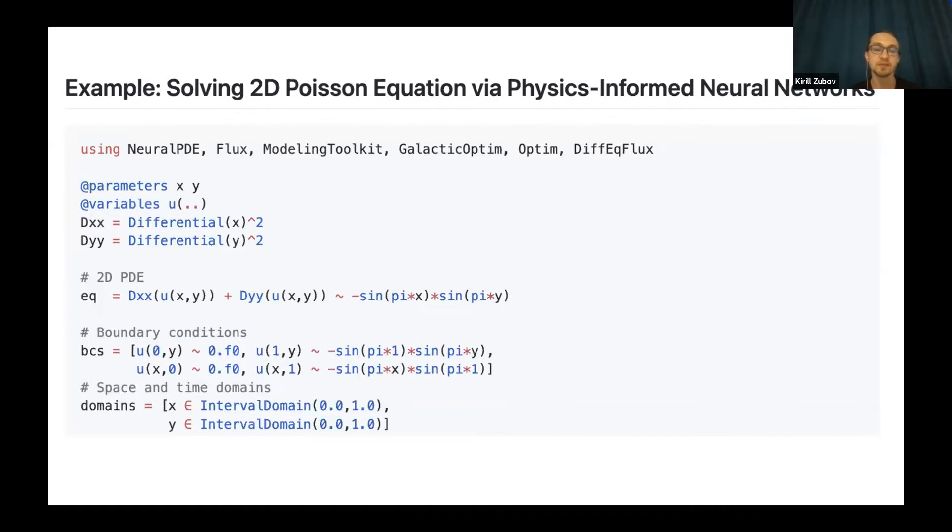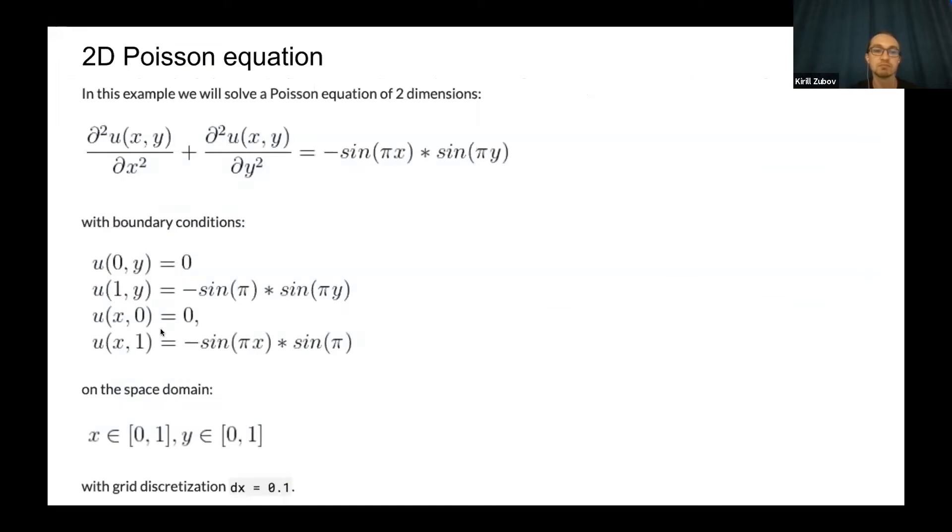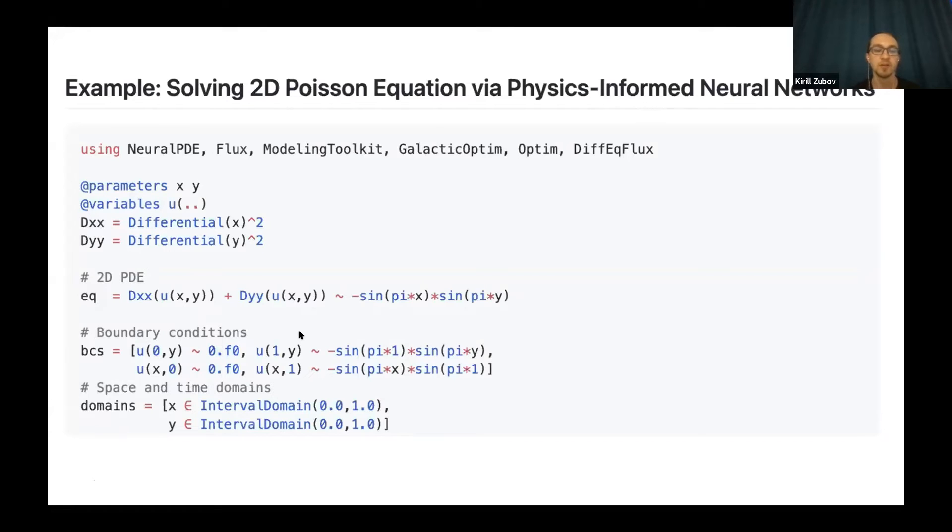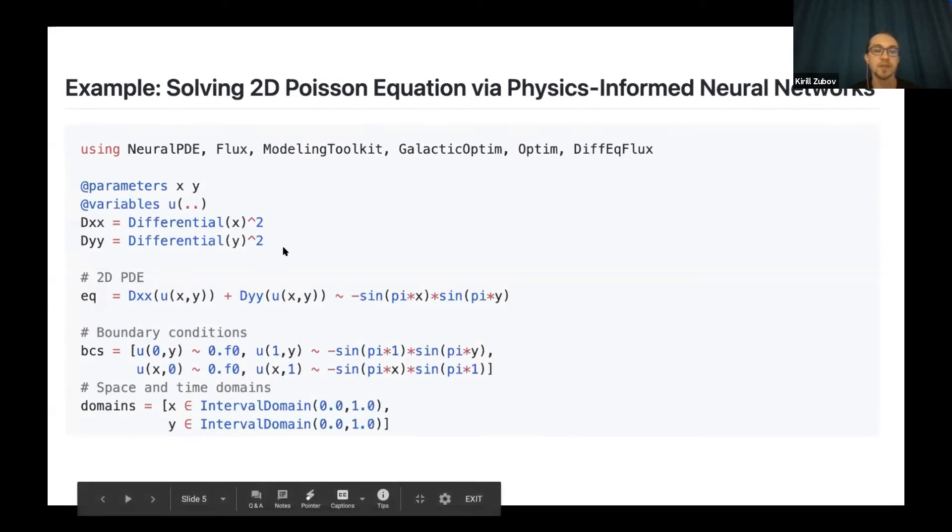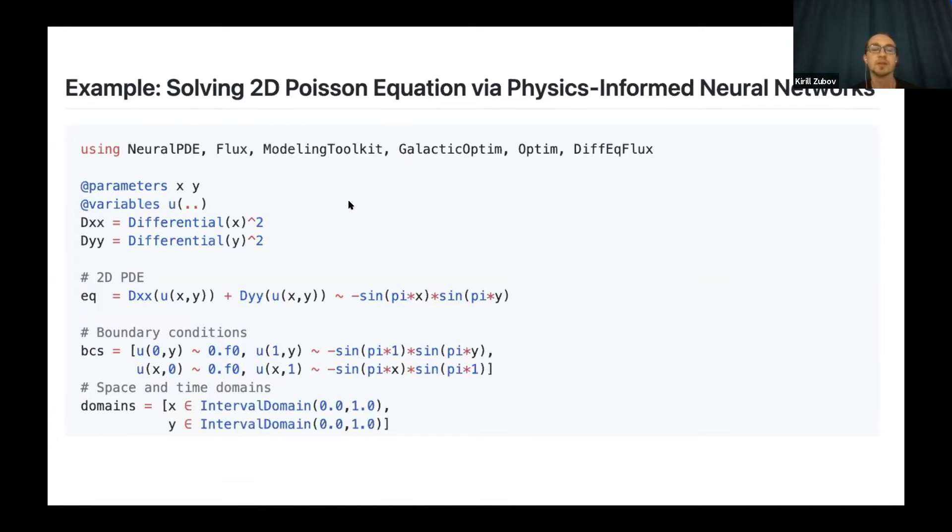And one of them is physics-informed neural networks in NeuralPDE. So first of all, we initialize the parameter variable and derivatives, and we define the equation and boundary condition. As you can see, it's very simple, very mathematical form of representation of the equation. If we compare with this, you can, without some problem, identify this equation. And also we create the domain. This is all the things that we represent the problem.